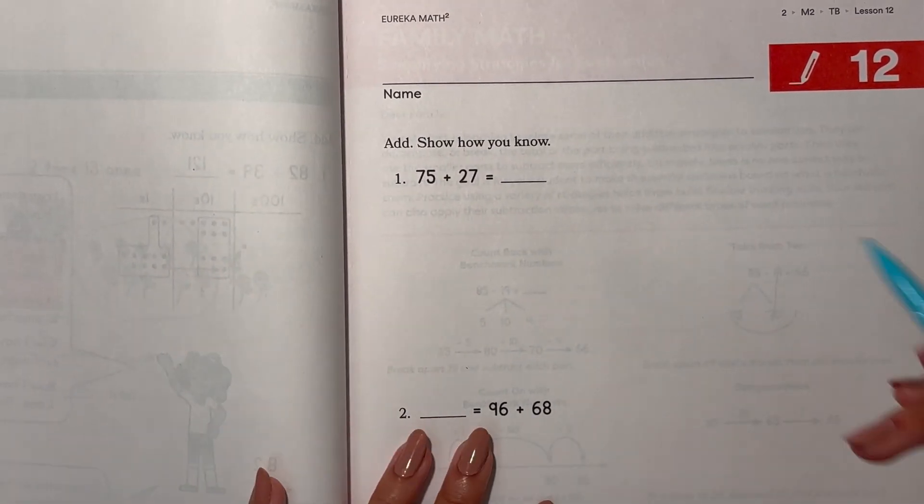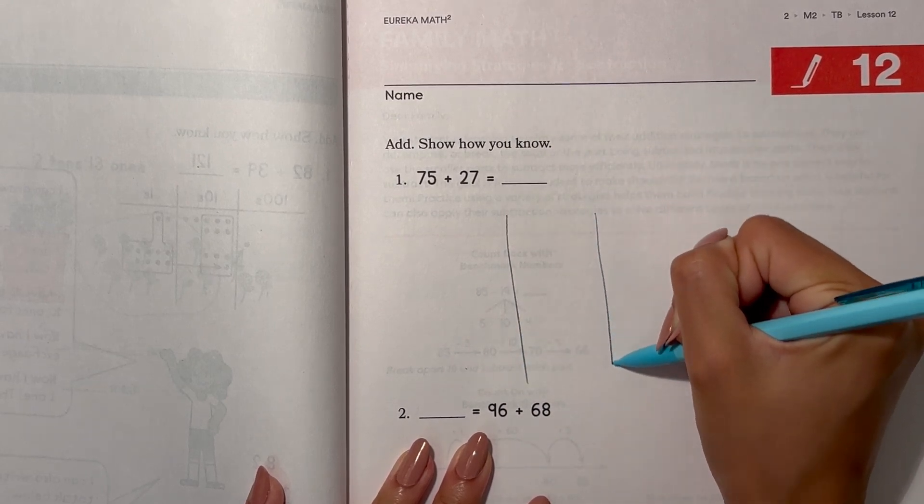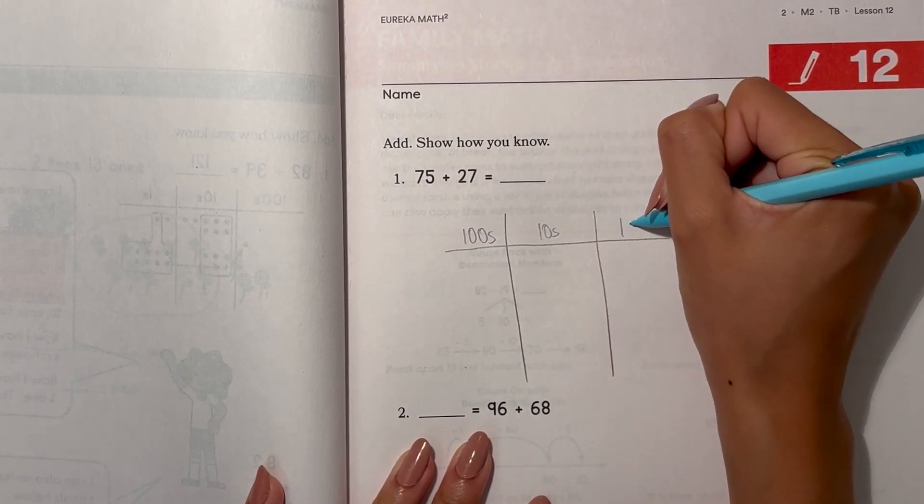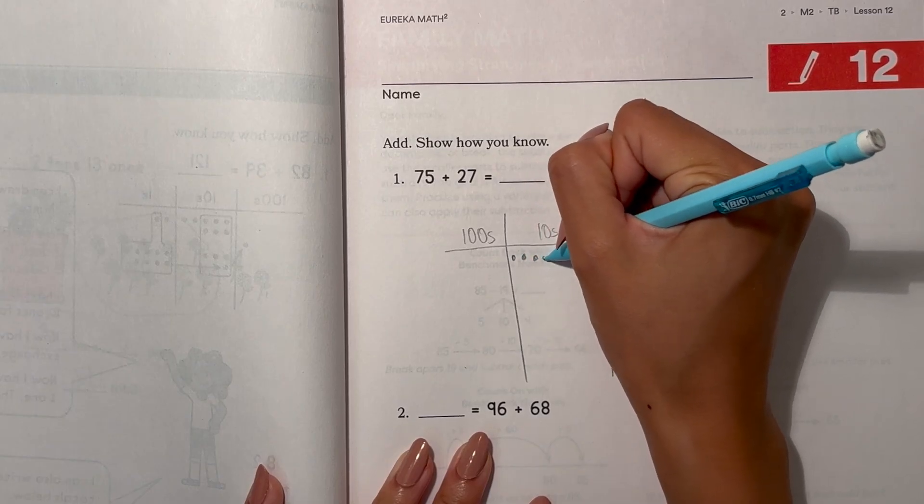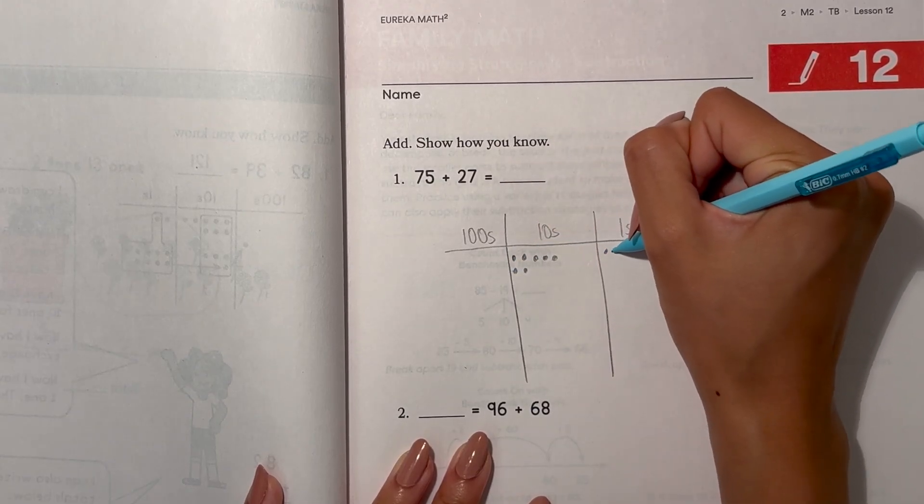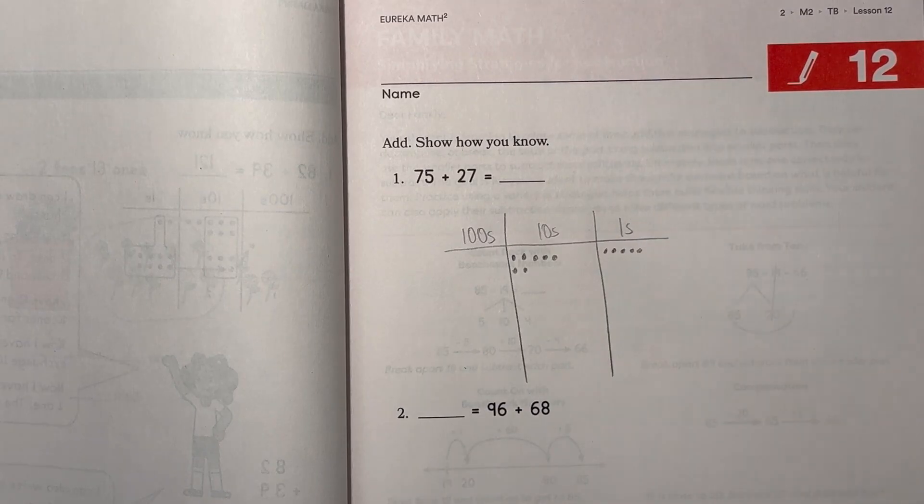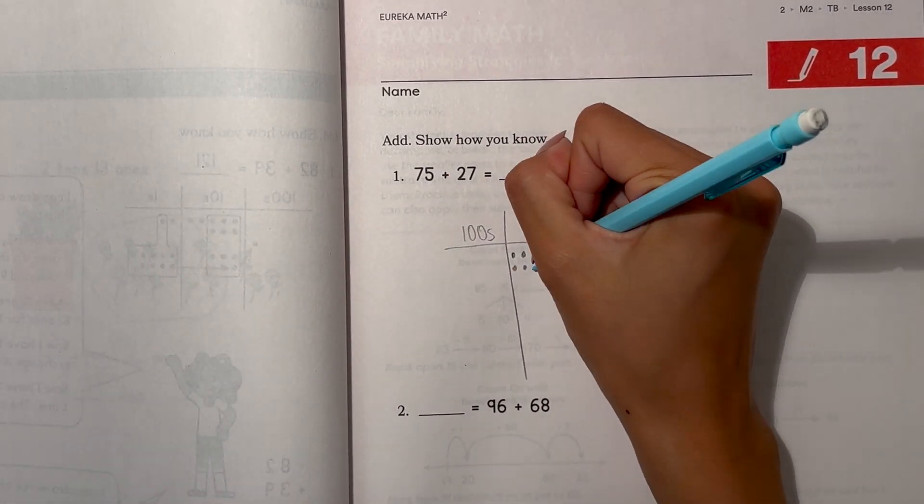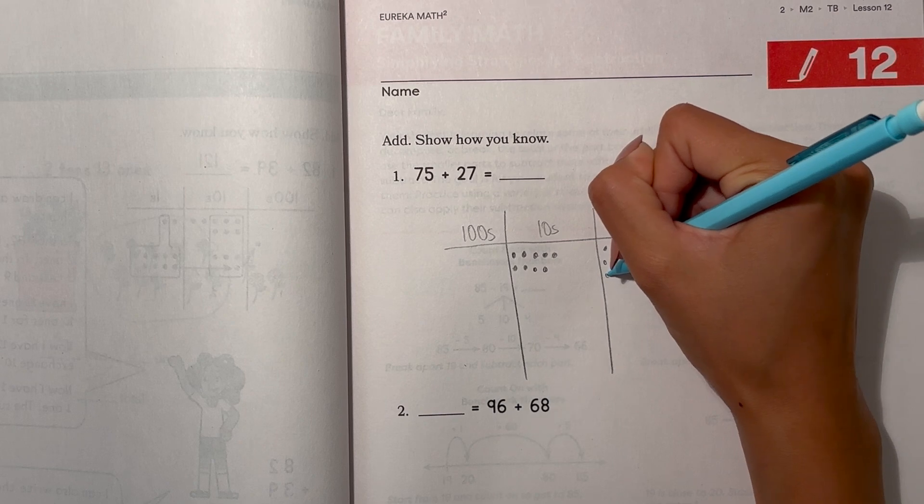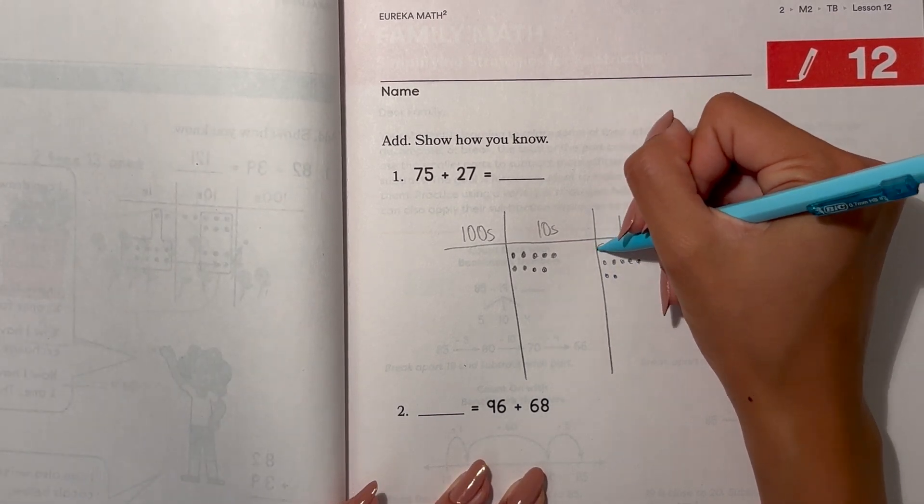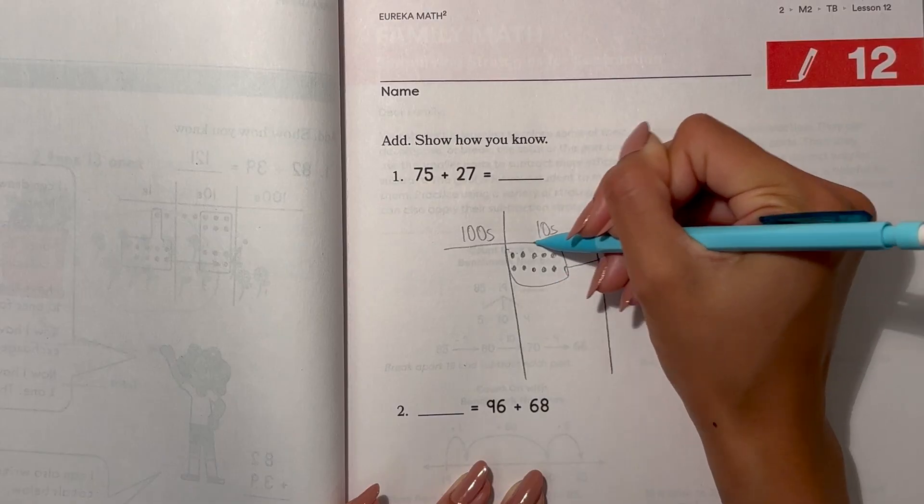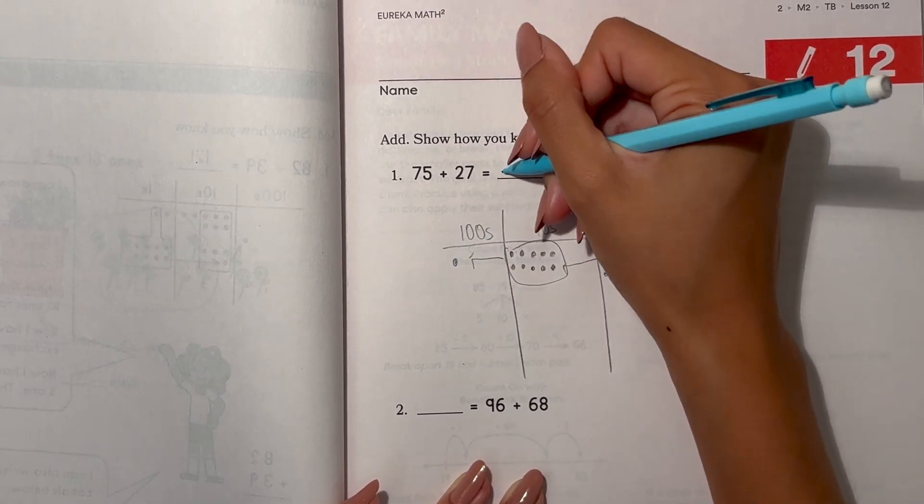And show how you know. This is our hundreds, tens, ones. 75 plus 27. Alright, let's regroup our ones. This becomes 10. And actually, this is 10 tens. So this can be regrouped into 100. So our answer is 102.